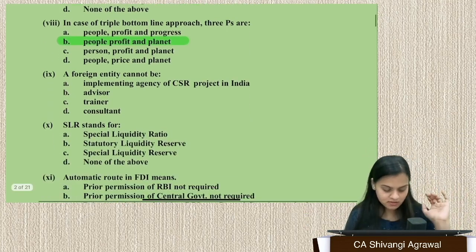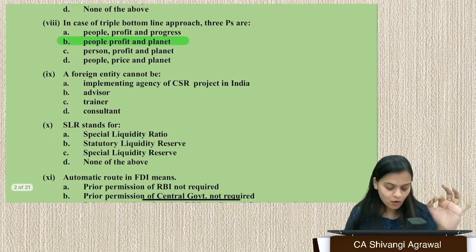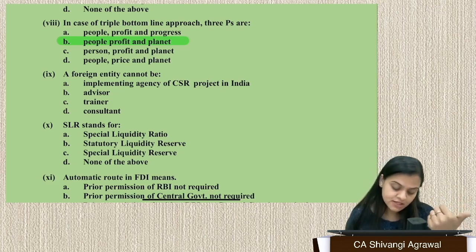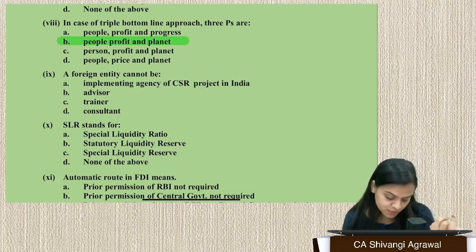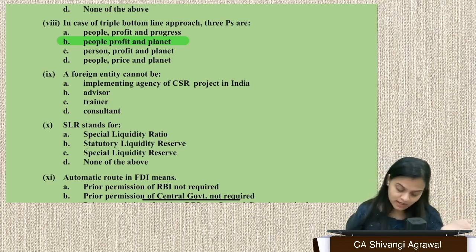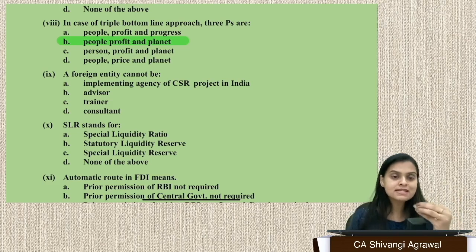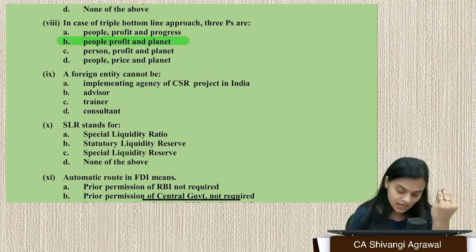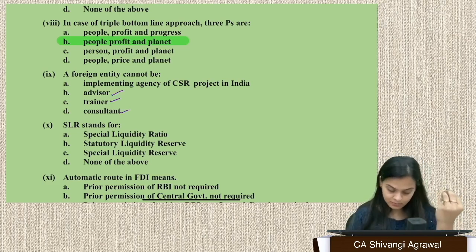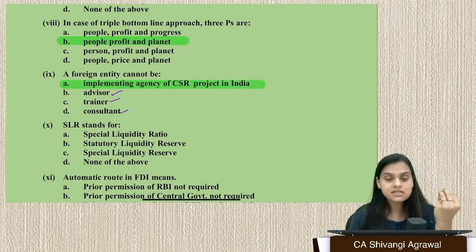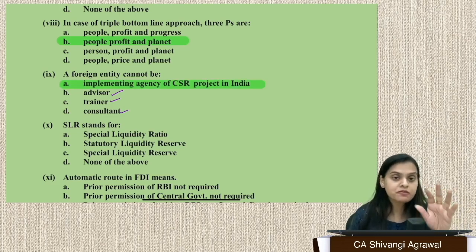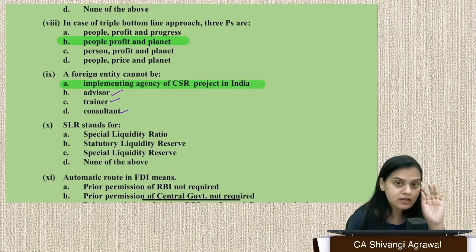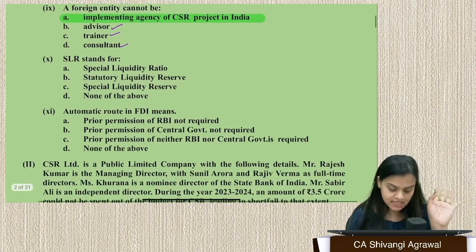Question 9: A foreign entity cannot be an implementing agency of a CSR project in India. It can be an advisor, trainer, or consultant — but it cannot implement CSR projects on the ground level in India.